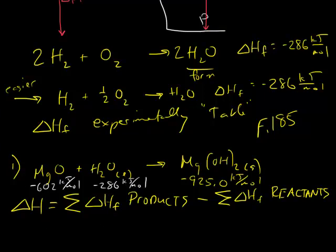So what we need to do is we need to take the value of the products. So the delta H, the first product is the magnesium hydroxide. There's one mole of it, times the negative 925 kilojoules per mole. It's the only product we have, so that's the sum.